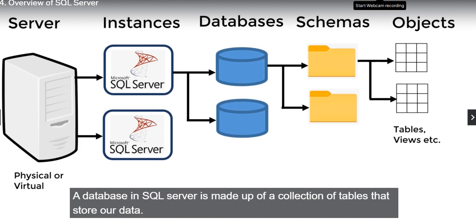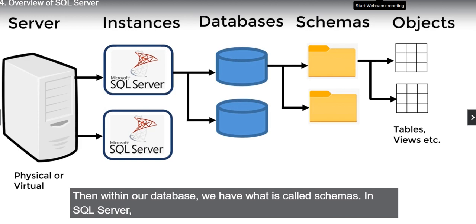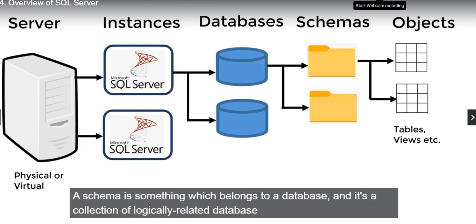We can also have various other types of objects in our database such as views, stored procedures, indexes, and more. Within our database we have what is called schemas. In SQL Server, a schema belongs to a database and is a collection of logically related database objects. SQL Server consists of databases, databases consist of schemas.